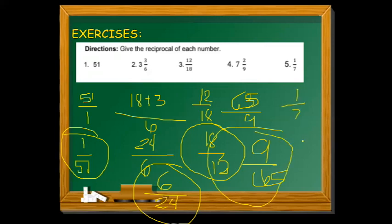And then this one, 1 over 7. The reciprocal is 7 over 1. Just reverse it. If it's 1 over 7, it becomes 7 over 1. That's how we find the reciprocal of a number.